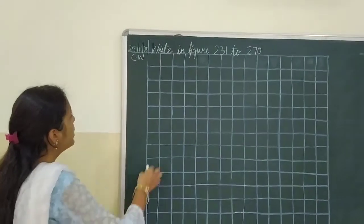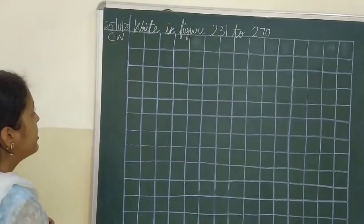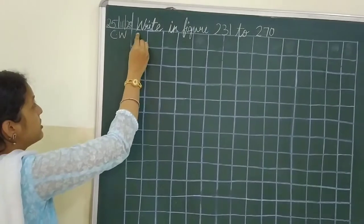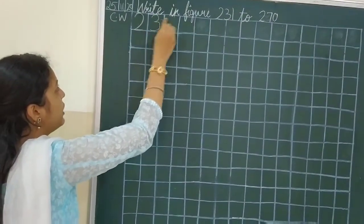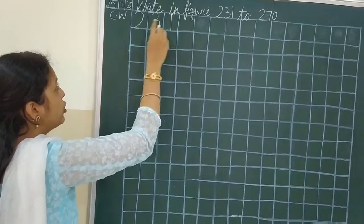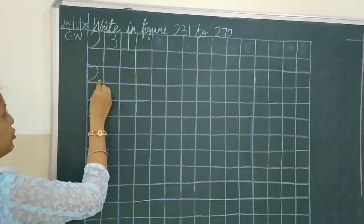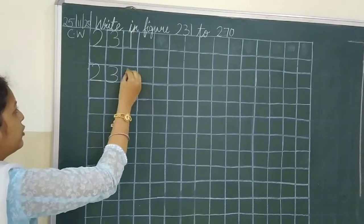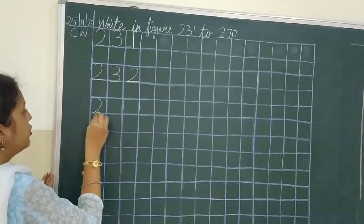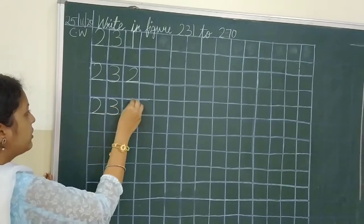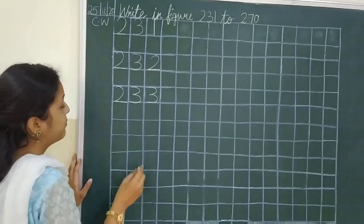So let's start writing. Remove your notebook. Write the title and CW and today's date. Now, the first box we are going to write: 231.